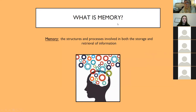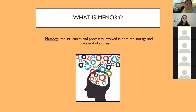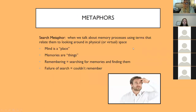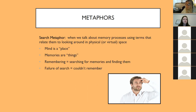So what is memory? When we talk about memory, we're referring to the structures and the processes involved in both storage and retrieval of information. We have to save that information, store it, and then to remember something we actually have to retrieve it — bring it back up later. When we use language to describe memory, sometimes we talk about it as if the mind is a physical place and you're looking for something. This way to describe memory is known as the search metaphor — talking about memory using terms that relate it to physical space.